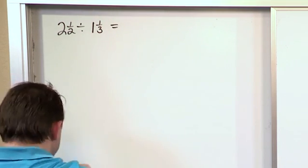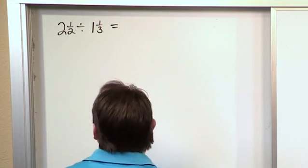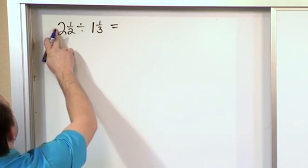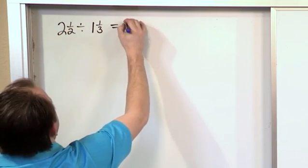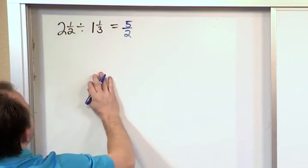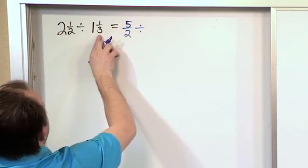The first thing we want to do is always, always convert these mixed numbers to improper fractions. So 2 times 2 is 4, plus 1 is 5, over 2, like that. And then we'll divide by what we have here.